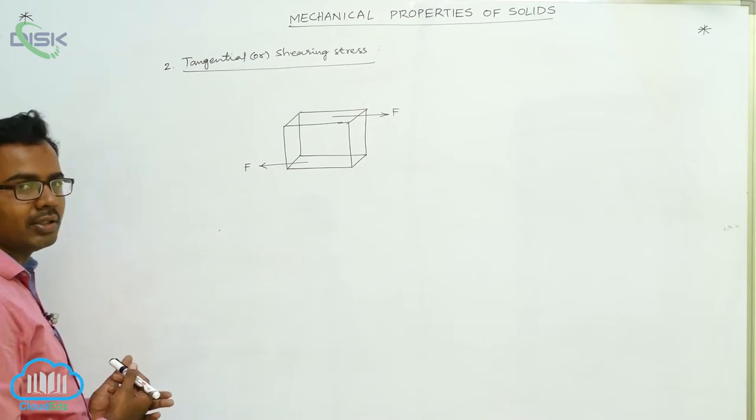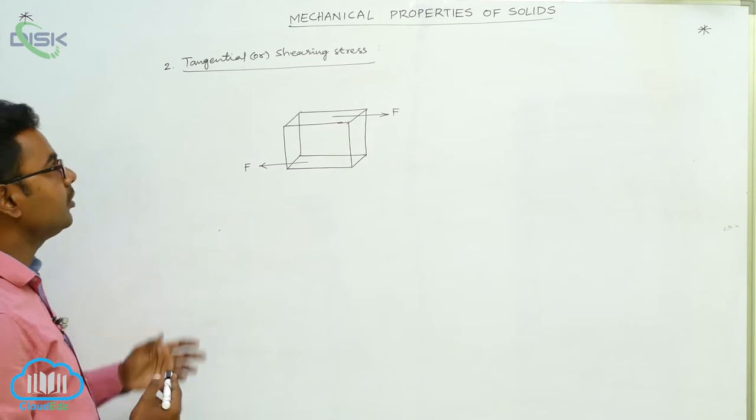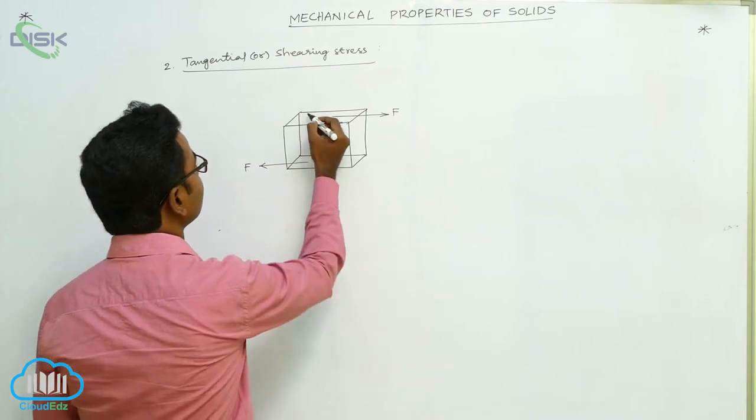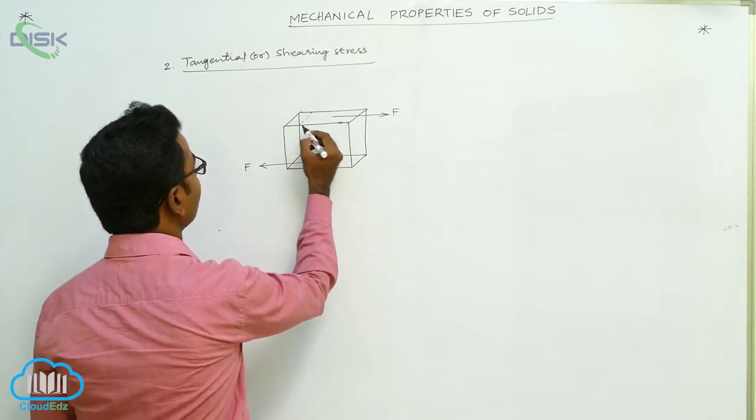Now what happens? This causes a change in the shape of the cube. The top surface is displaced like this.